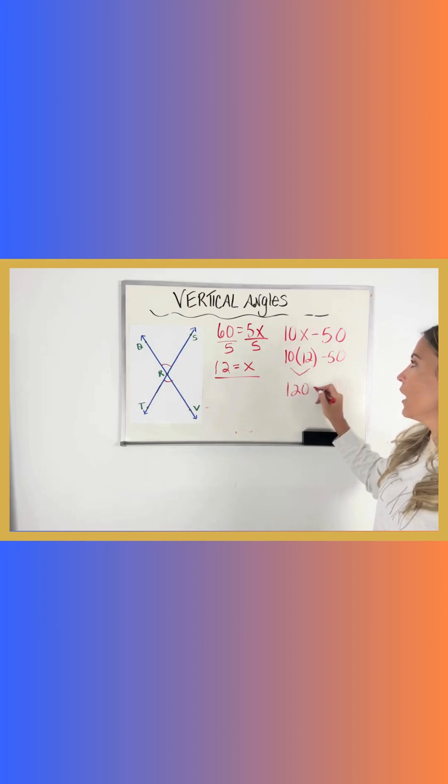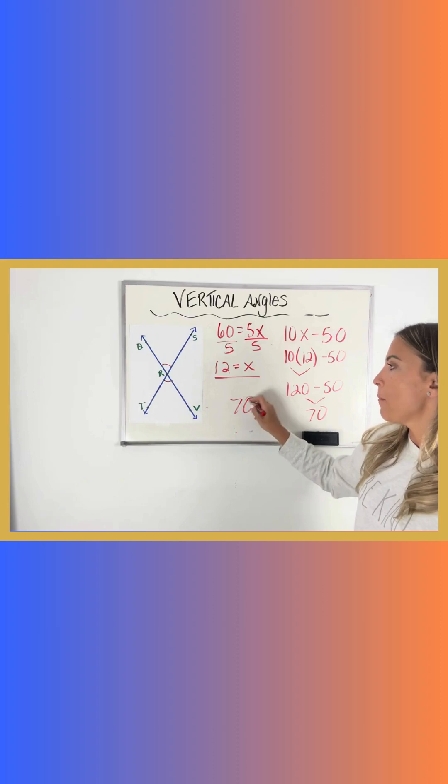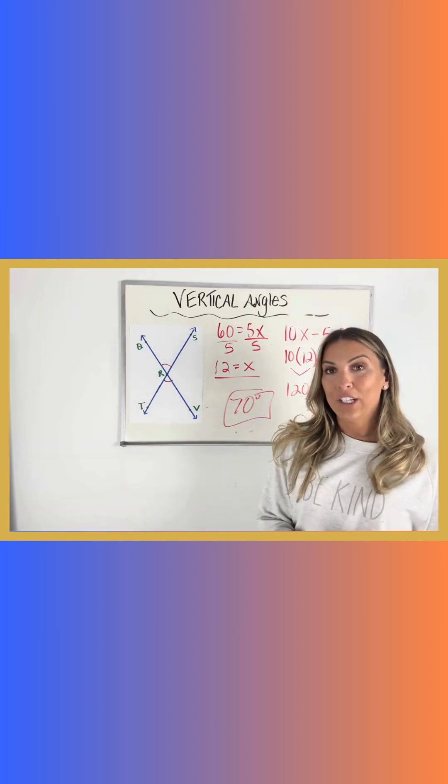So 12 times 10 is 120. 120 minus 50 is 70. So that means that the measure of the angle that I was asked to find is 70 degrees.